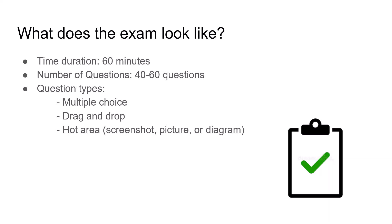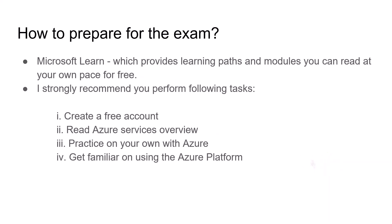The exam presents several question types. The first is multiple choice — one correct response and three incorrect responses, or select one, two, or more correct responses out of five or more options. The second type is drag-and-drop, where you move the response to the correct description. The third is hot area, where you answer questions presented in the form of a screenshot, picture, or diagram in graphical form.